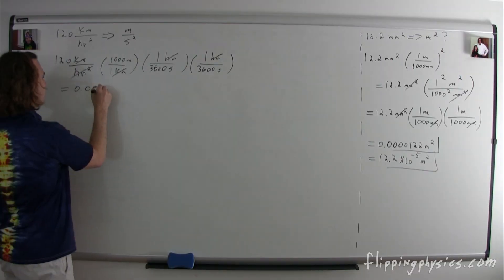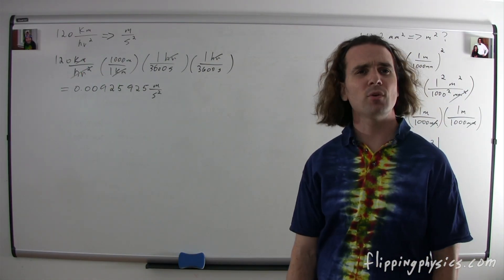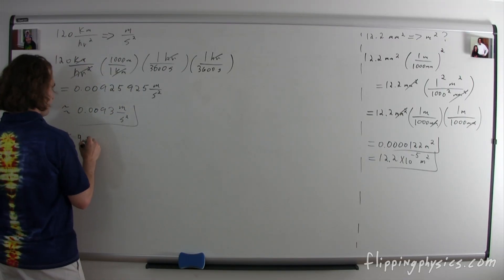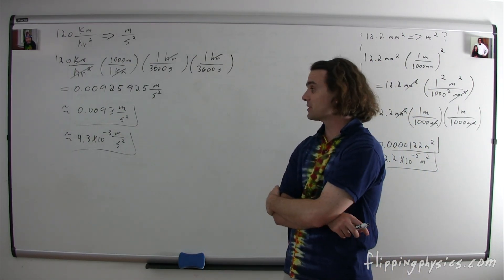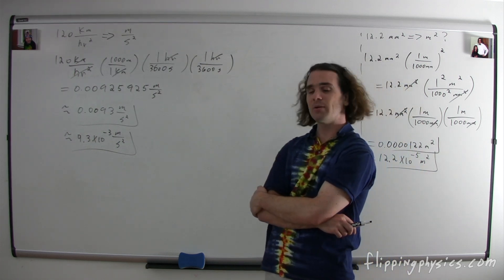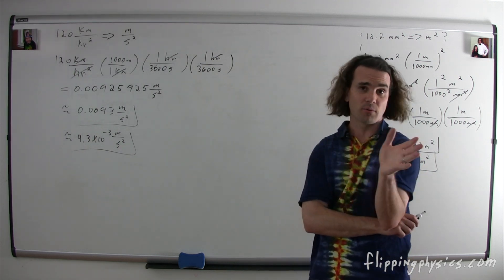0.00925925 meters per second squared. Great. Bobby, what is Bo forgetting here? Significant digits. We need to end with two significant digits because 120 has two. Therefore, we need to round up to 0.0092 or 9.3 times 10 to the negative 3 meters per second squared. Great, you could leave it as 0.0093 meters per second squared, or 9.3 times 10 to the negative 3 meters per second squared is also correct. They're both the same thing.